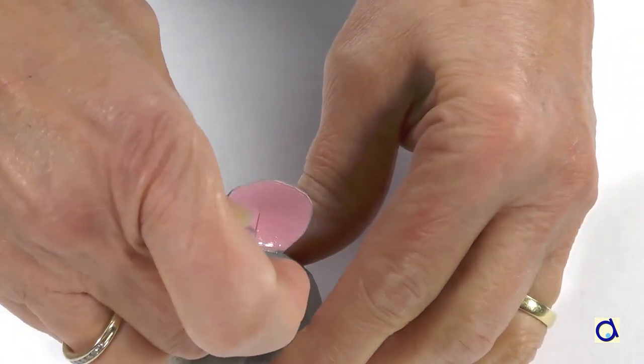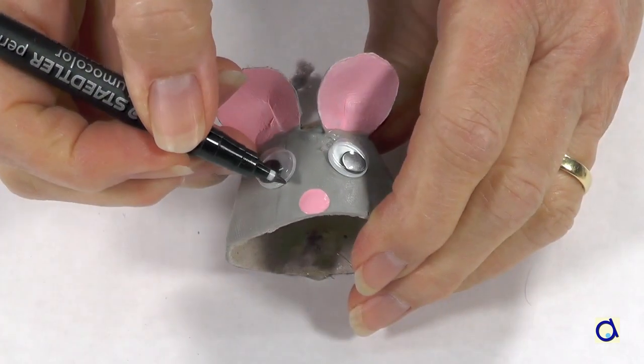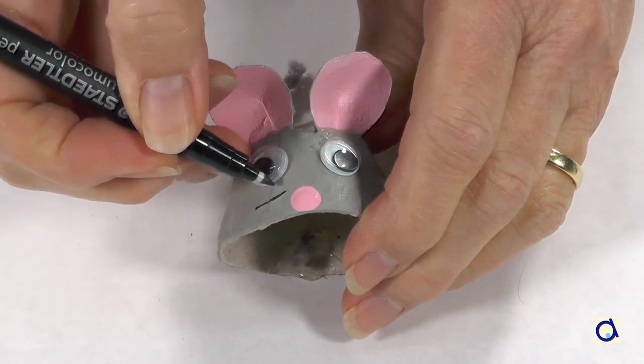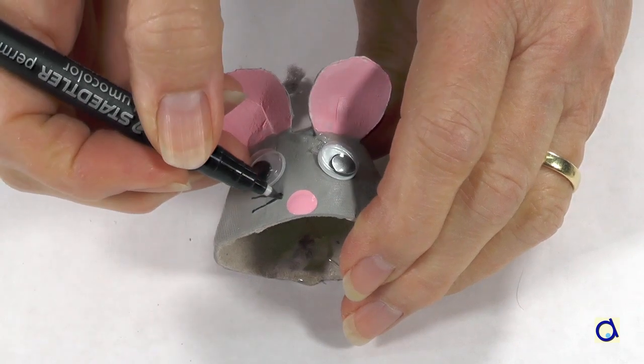Glue two googly eyes to the front of the head with a glue gun. And finally, trace the whiskers with a thin black marker.